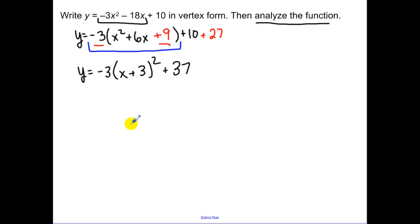So now we just completely analyze the function. They want us to find the vertex, they want us to find our axis of symmetry. Remember the axis of symmetry is a line that goes through the vertex. And then we open down because our 3 is negative, and we have a vertical stretch of 3.